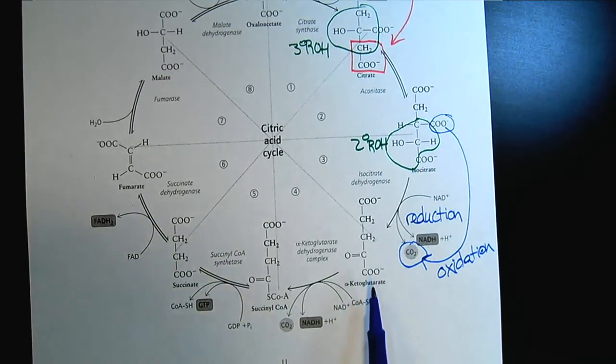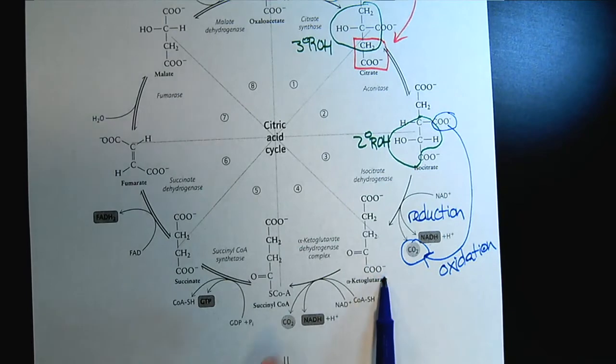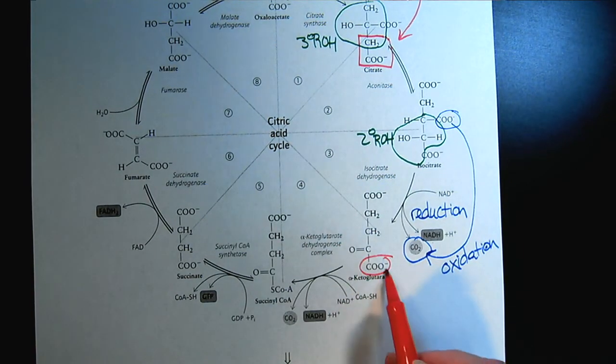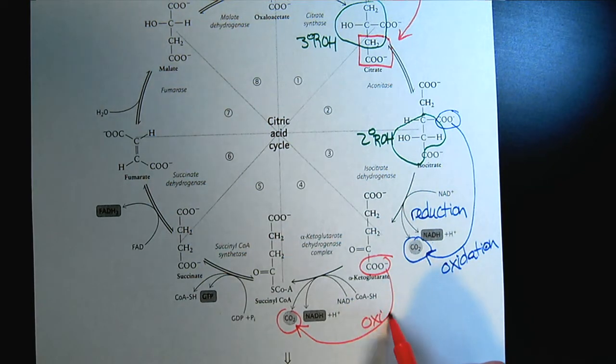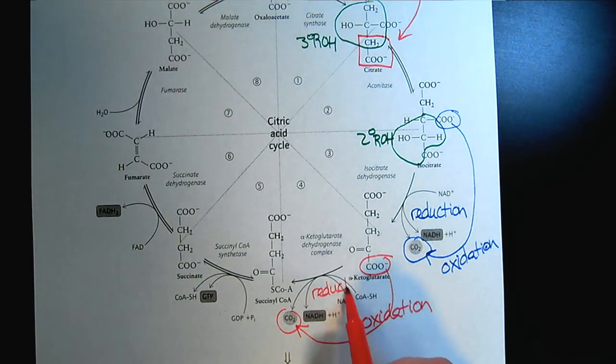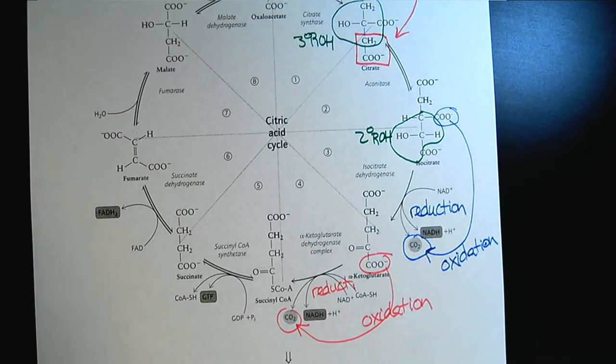From alpha-ketoglutarate, what happens to change it into succinyl-CoA? Let's compare these two molecules to look for changes. Sure enough, we'll notice that we have the loss of another CO2 molecule. So we have another oxidation, and that's combined with the reduction of another coenzyme. Another oxidation reduction reaction.